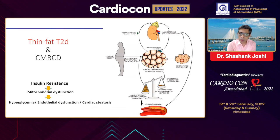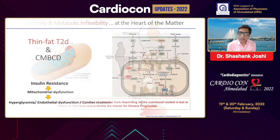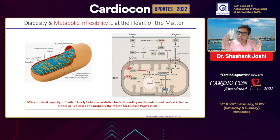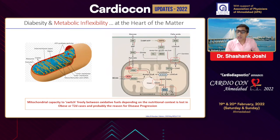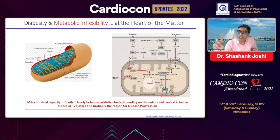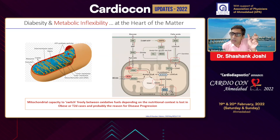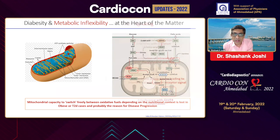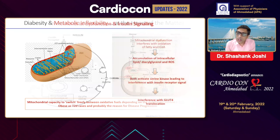Insulin resistance leads to mitochondrial dysfunction, which leads to endothelial dysfunction, cardiac steatosis, and hypoglycemia. Metabolic inflexibility — the inability of mitochondria to switch between oxidative fuels depending on nutritional context — is lost in obesity or type 2 diabetes. That triggers inflexibility in the mitochondria, and this is where the marriage happens: the mitochondria is the place where diabetes marries heart disease. The inability of mitochondria to switch between fuels in the presence of obesity or type 2 diabetes leads to heart disease.